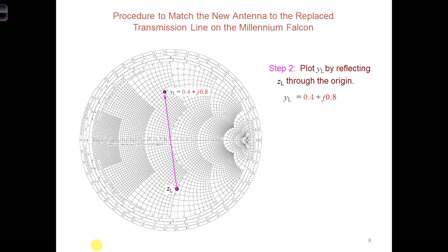Since it's easier to use admittances when working with circuit elements in parallel, let's now convert the impedance of our antenna to the corresponding admittance.